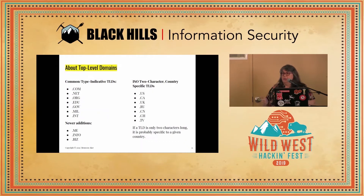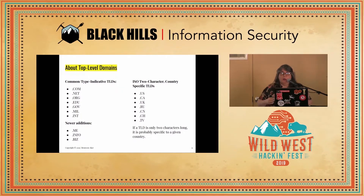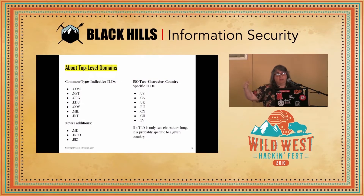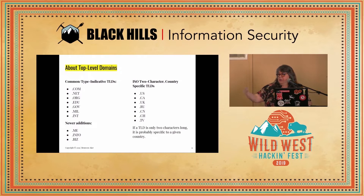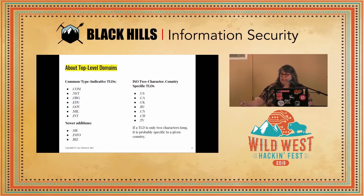Let's talk about top-level domains. Originally when the internet went public, there were six: .com (commercial), .net (network), .org (non-profit organization), .edu (degree-granting educational institution), .gov — initially only US federal government agencies, now available down to the city level — and .mil (military, specifically our military).